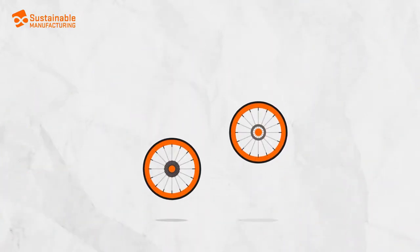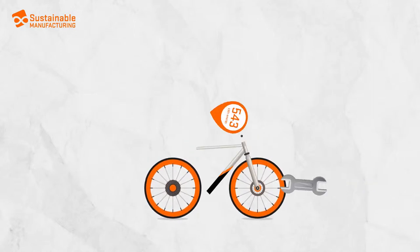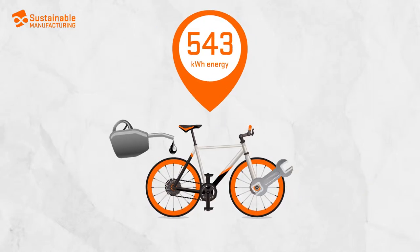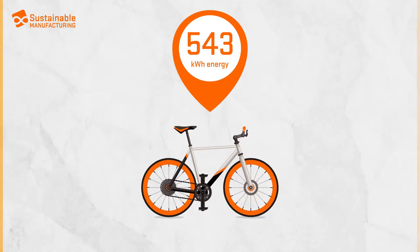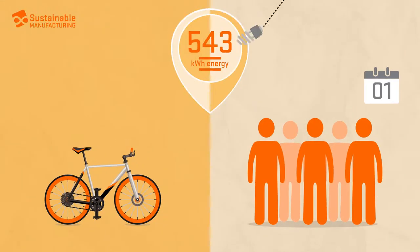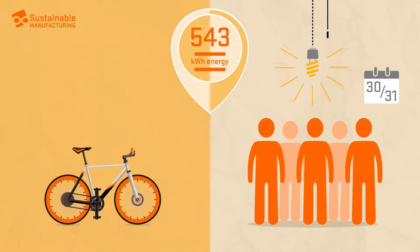The production of a bicycle, like this one, requires an average of 543 kilowatt-hours of primary energy. That corresponds to the monthly power consumption of a typical household of five in Germany. And this is just one product.